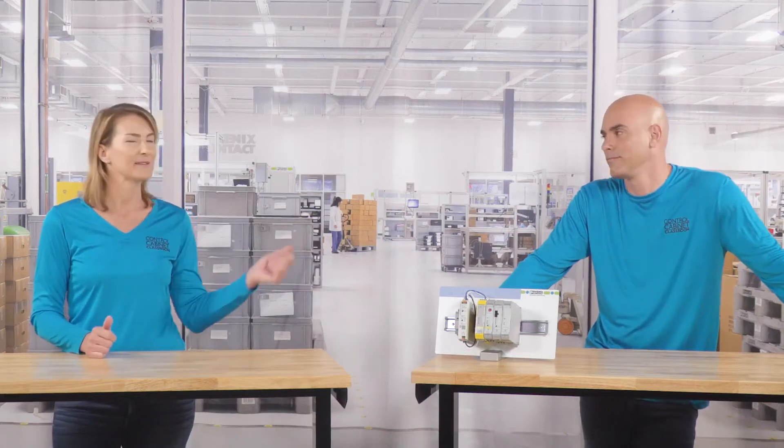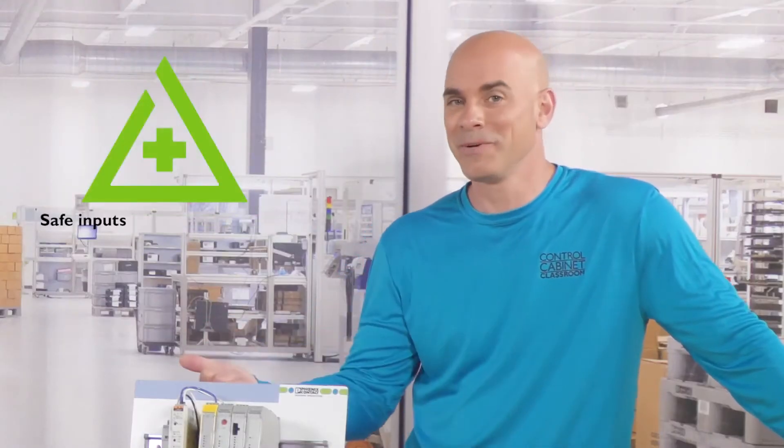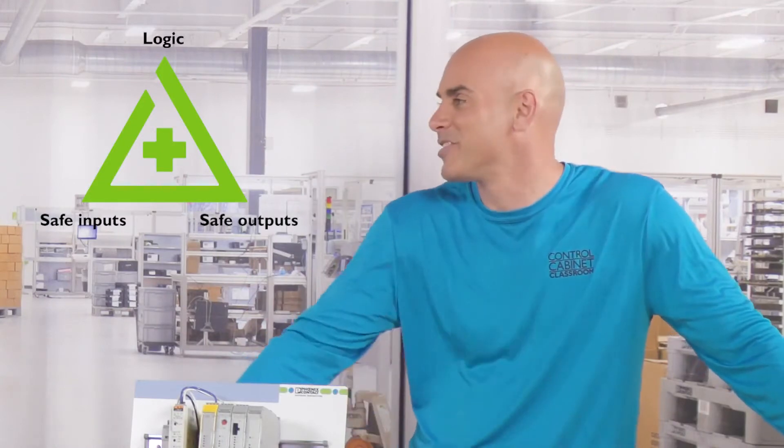Hi, I'm Karen and that's Jeremy. Welcome back to class. In our previous video on functional safety, we discussed the main factor behind safety: unacceptable risk. Today we're going to review the three required pieces of any safety system and how they interoperate. Today we're reviewing the safety triangle: safe inputs, outputs, and logic.